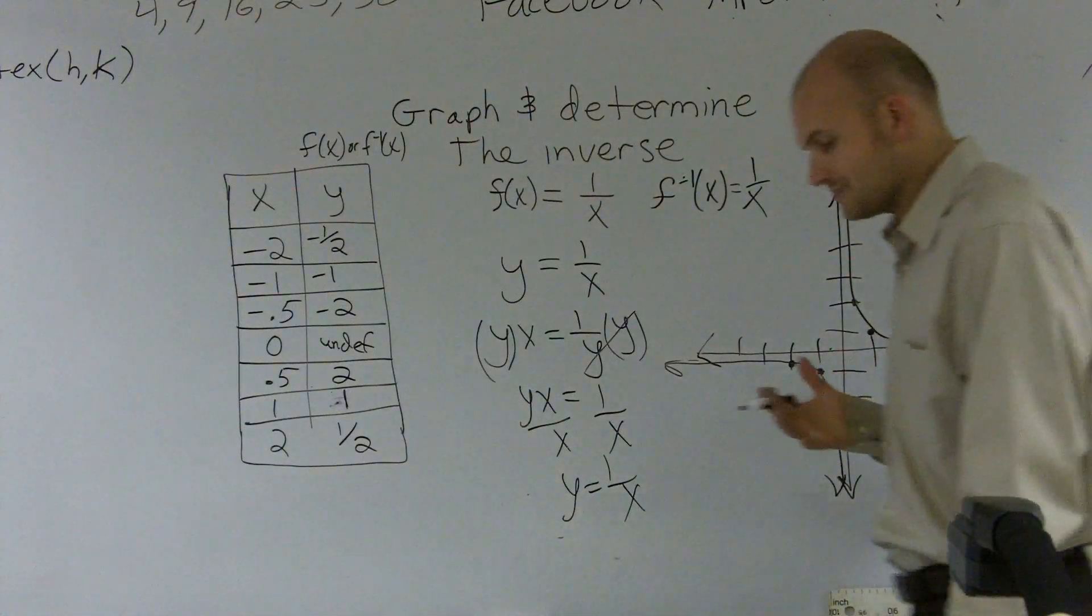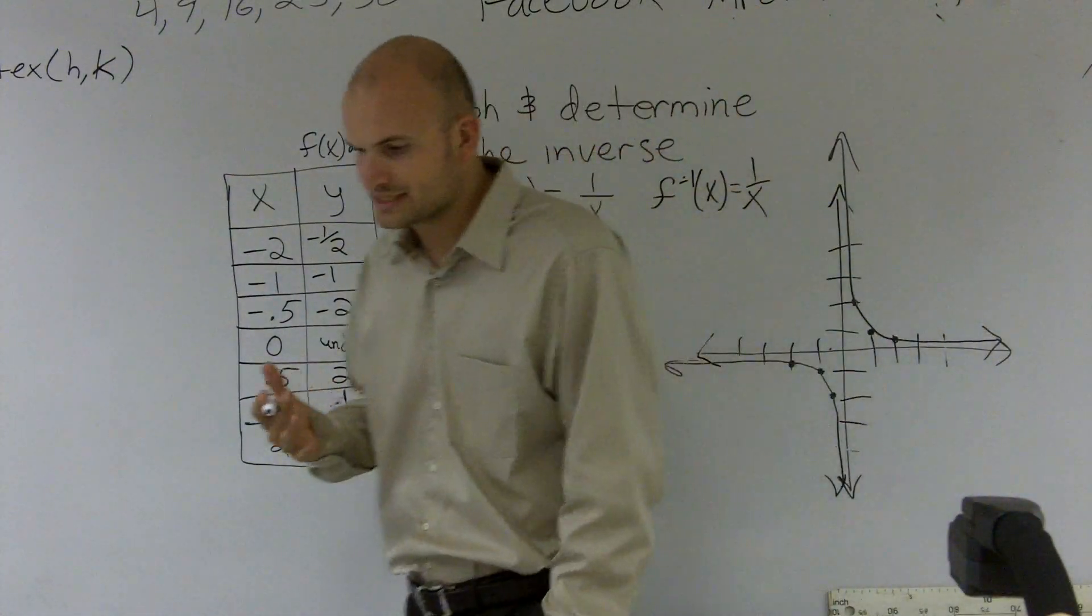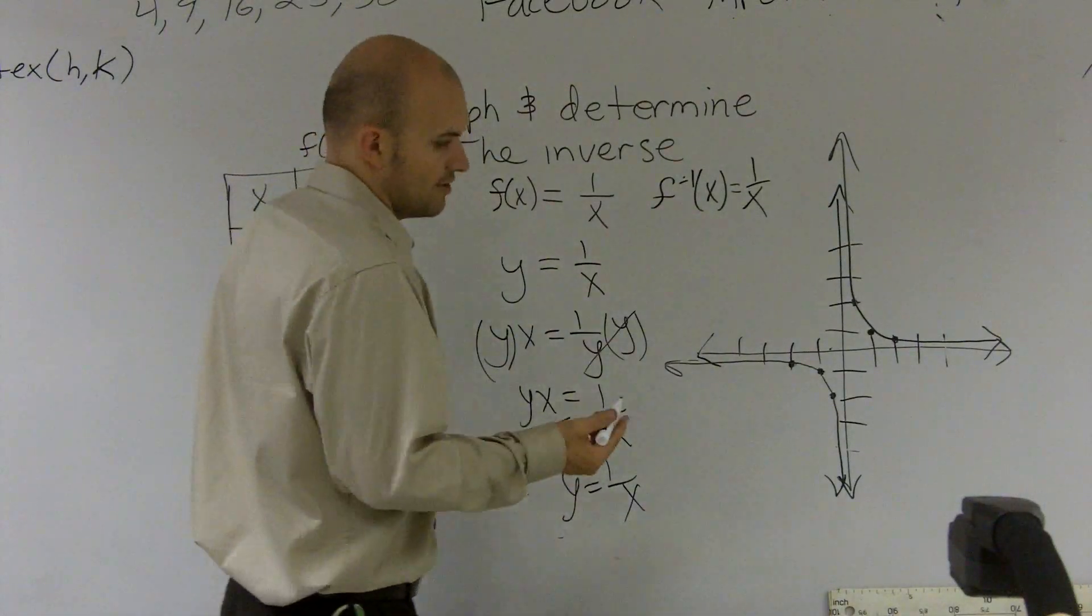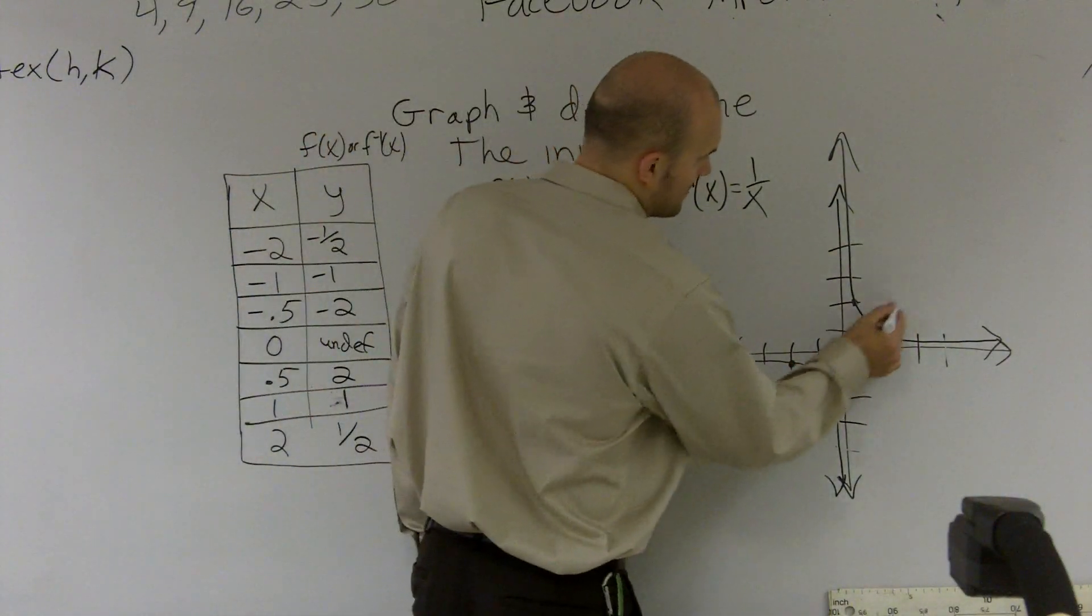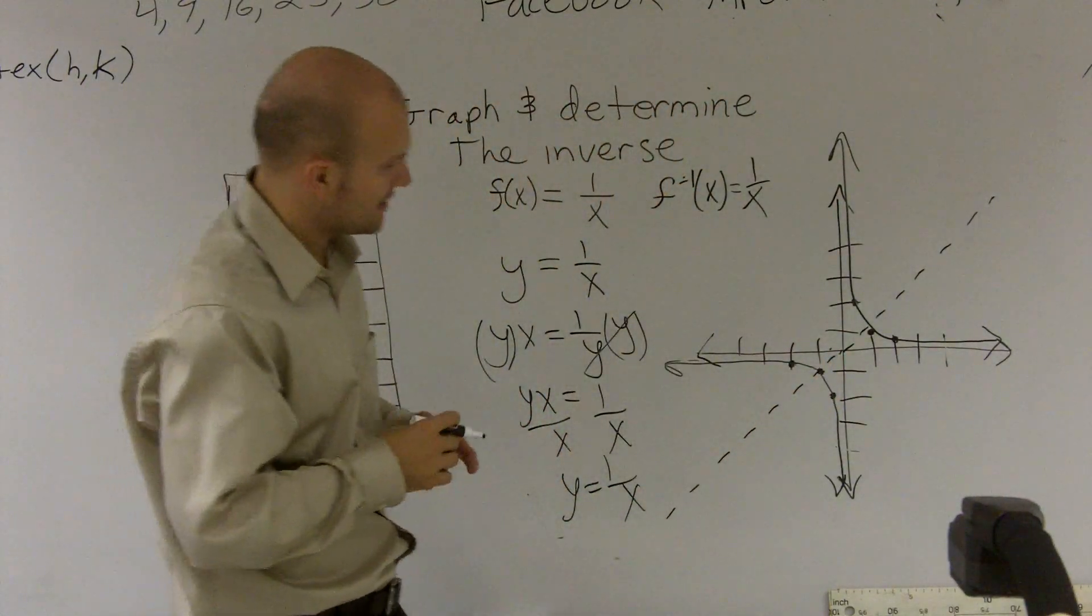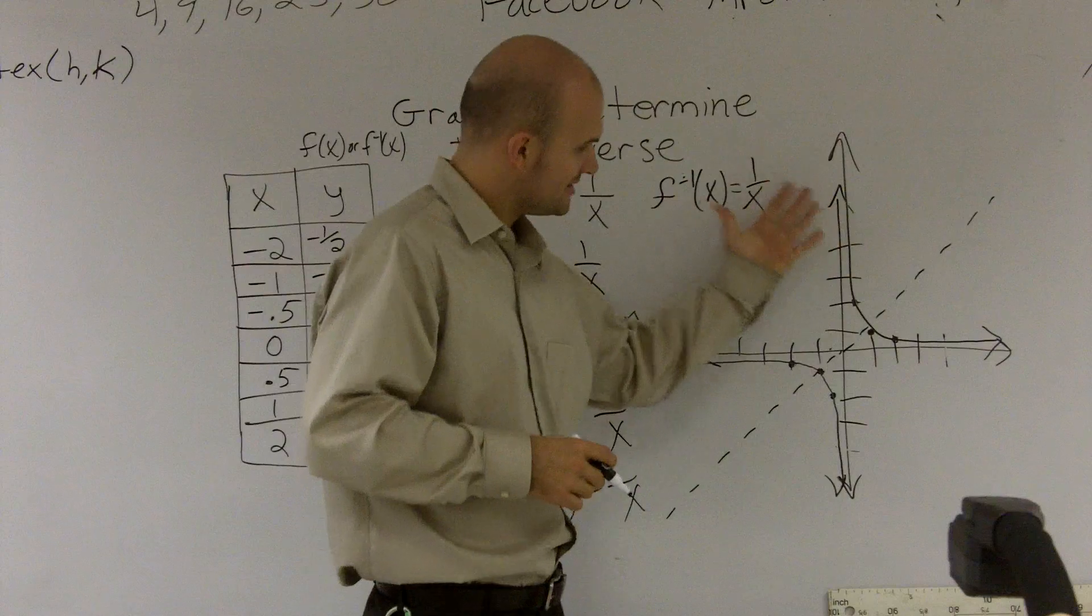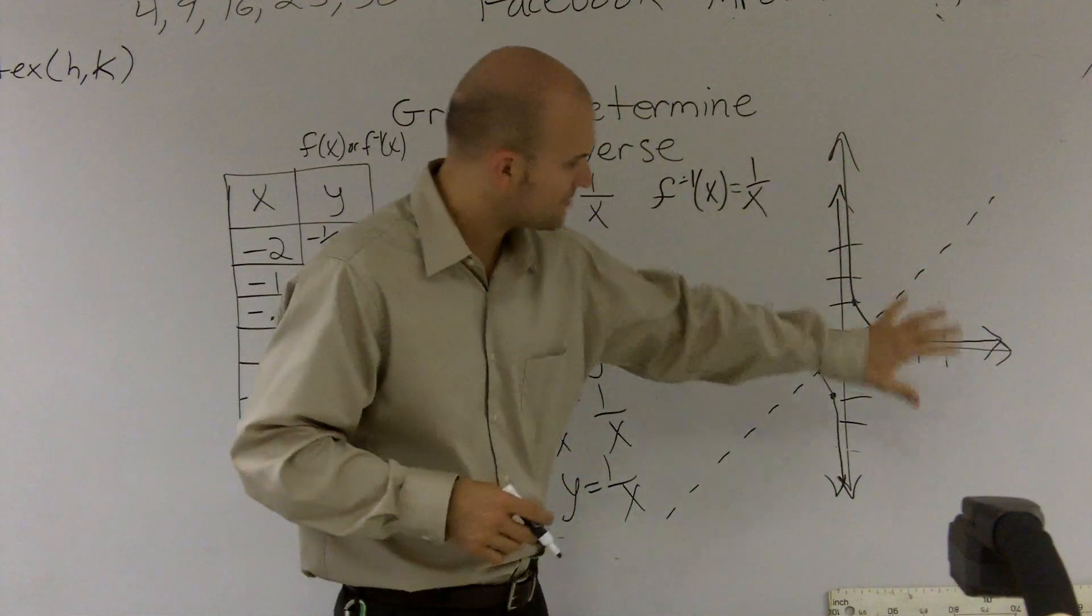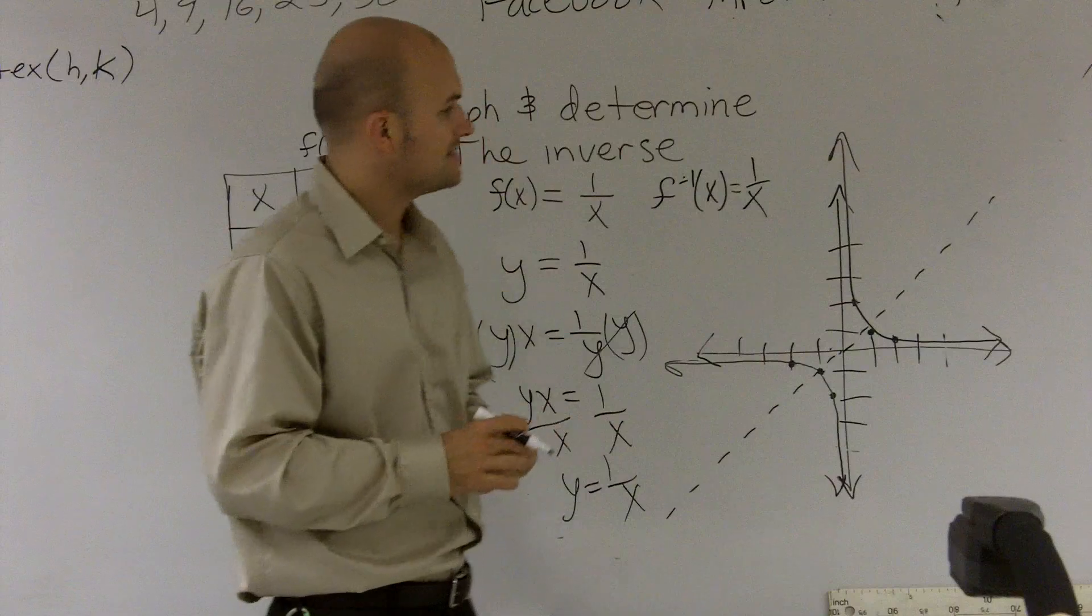So the other thing we've talked about with even our functions and its inverses is that they're symmetrical about the xy line. So if I'm going to look at the xy line, or the x equals y line, some people like to say, you've got to look at is this part of the graph the exact same if I flipped it over to this graph? And the answer is yes.